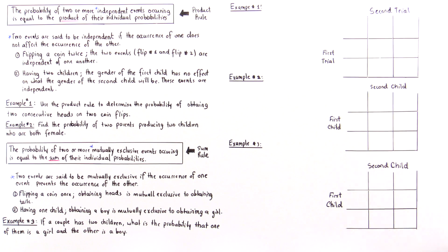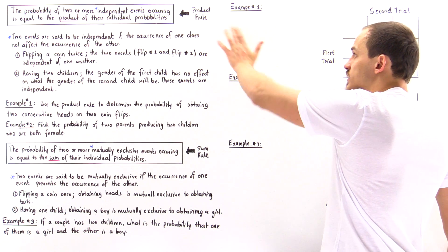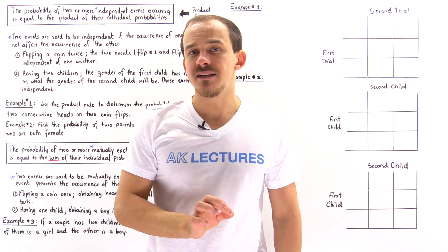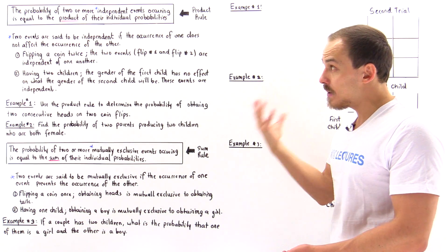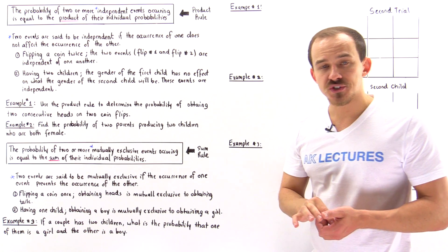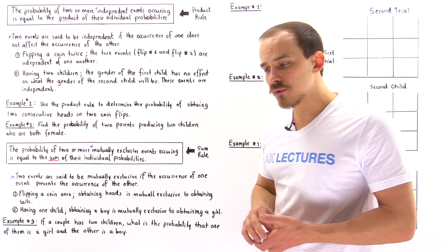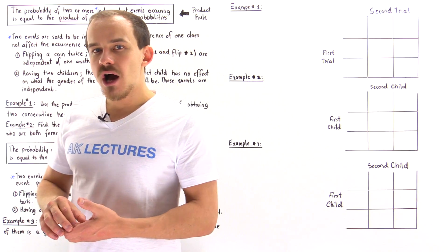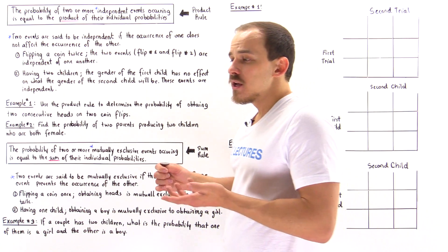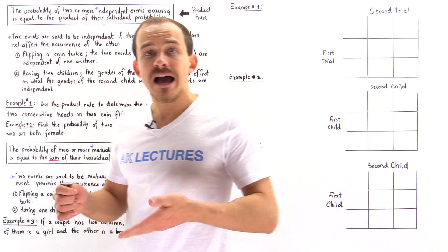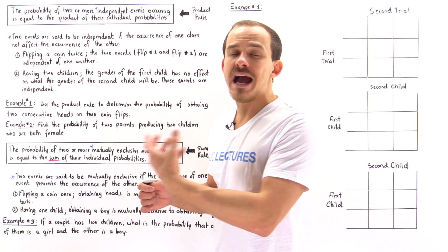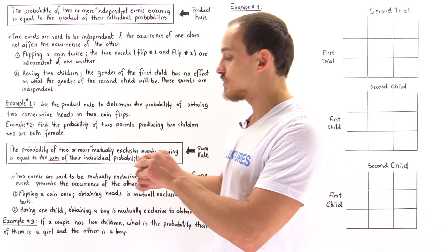In order to fully understand what the product rule tells us, we have to define what it means for two or more events to be independent of one another. To demonstrate independence, let's use a coin. We're going to flip a coin twice. Our two events are coin flip number one and coin flip number two. Before the flip, there are two possible outcomes: heads or tails. We don't know the outcome before we carry the event out, so let's carry it out.